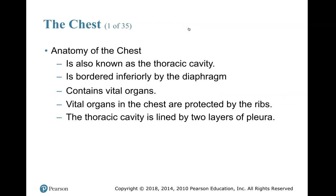Review of the anatomy of the chest — also known as the thoracic cavity. It is bordered inferiorly by the diaphragm, meaning the diaphragm is underneath the thoracic cavity. We need to know what inferior and superior mean. It contains vital organs, and the thoracic cavity is lined by two layers of pleura.